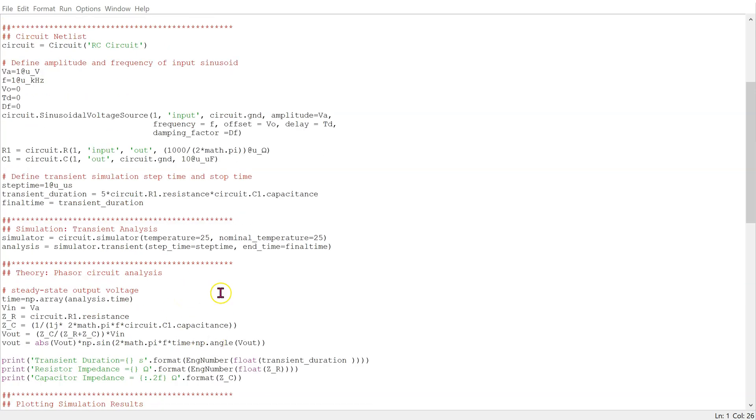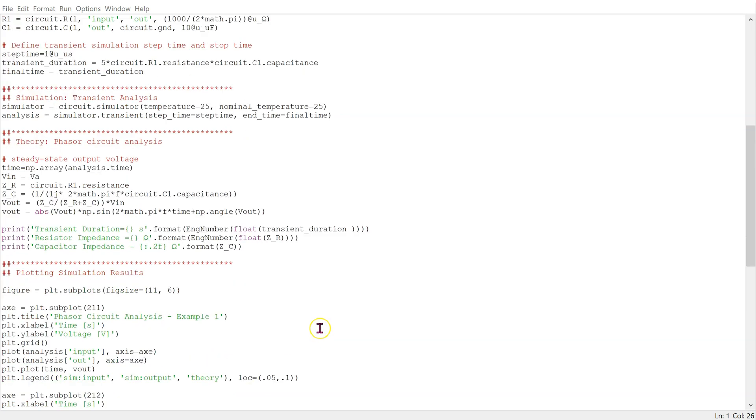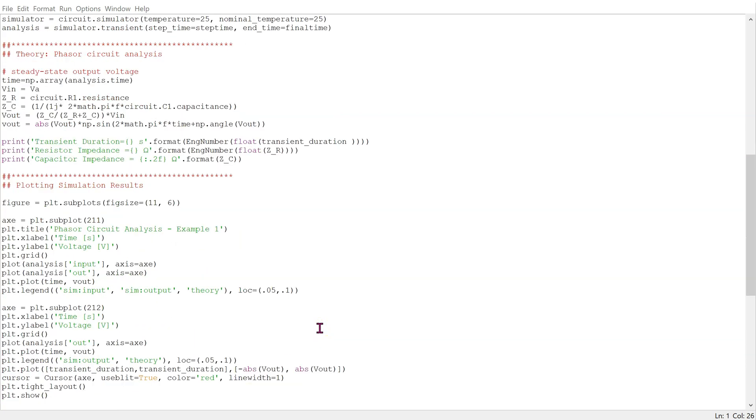This is the theoretical phasor circuit analysis part. We extract the time vector from the simulations. We define the input phasor and the impedances. We calculate the output phasor voltage and then transform it back to the time domain. The plotting commands are here. We are plotting the time domain voltages.